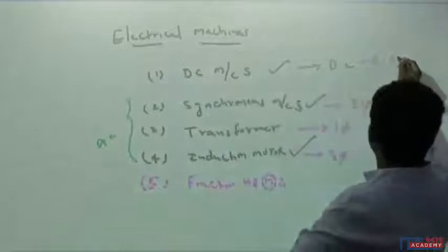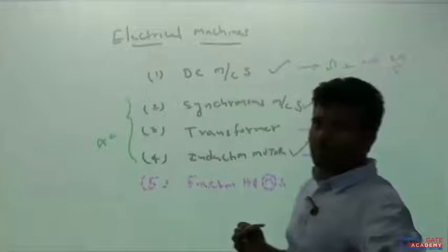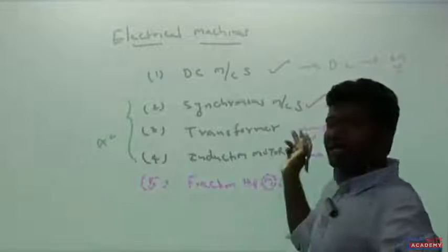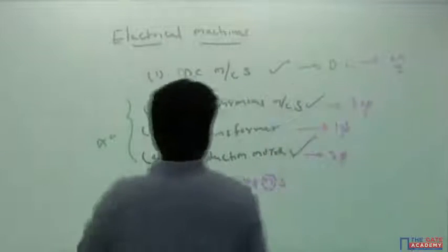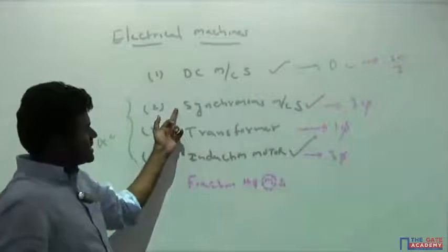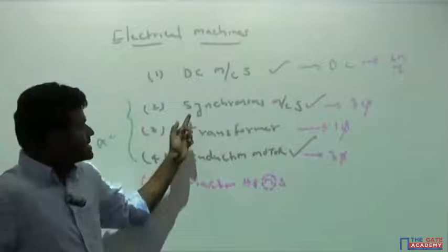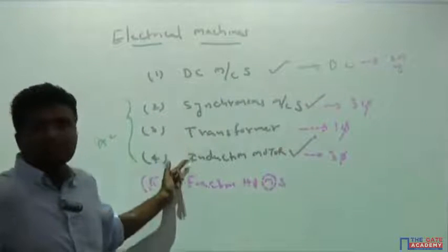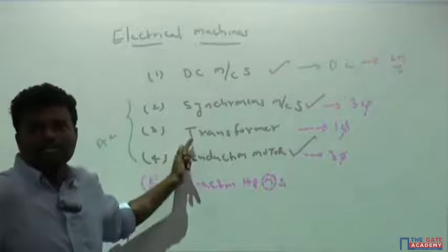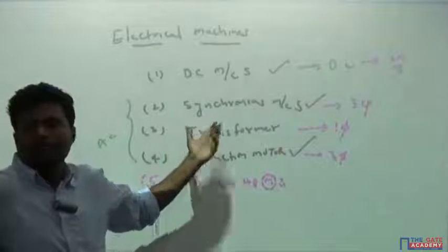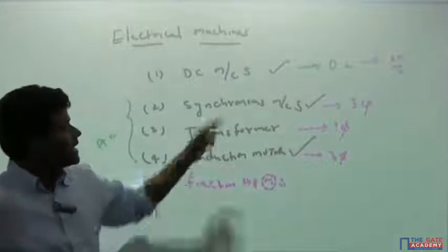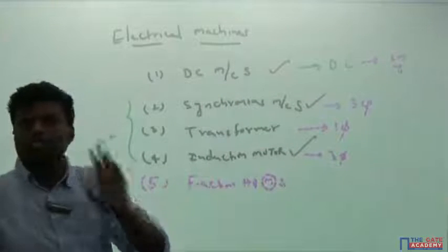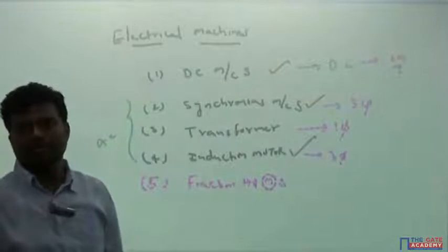That DC machines question may be worth two marks, or a two-mark plus one-mark combination giving three marks. Most questions come from synchronous machines, transformers, and induction motors, so the mark distribution can change — sometimes two marks, sometimes four or five. But I can guarantee at least one question always comes from DC machines.